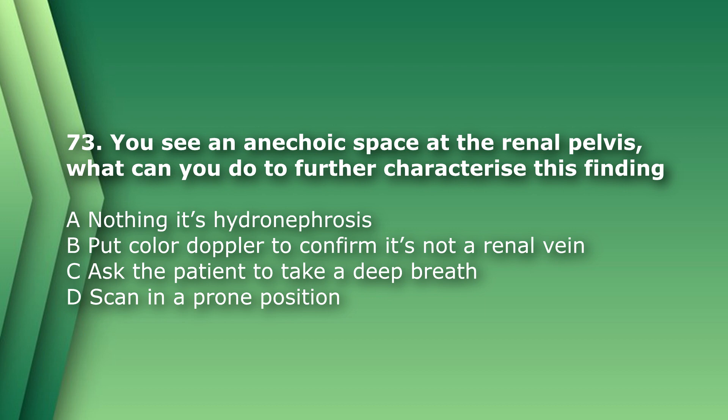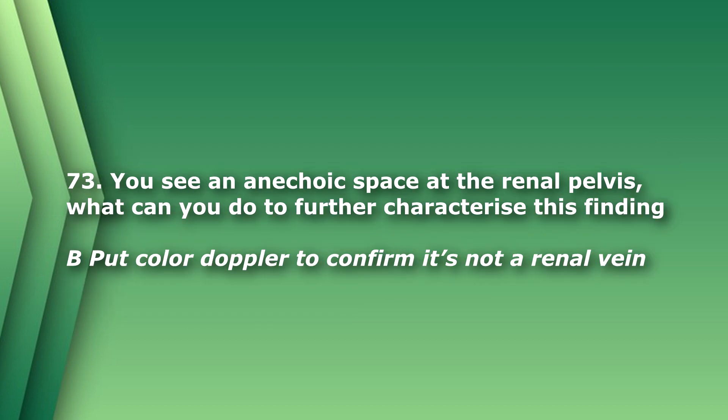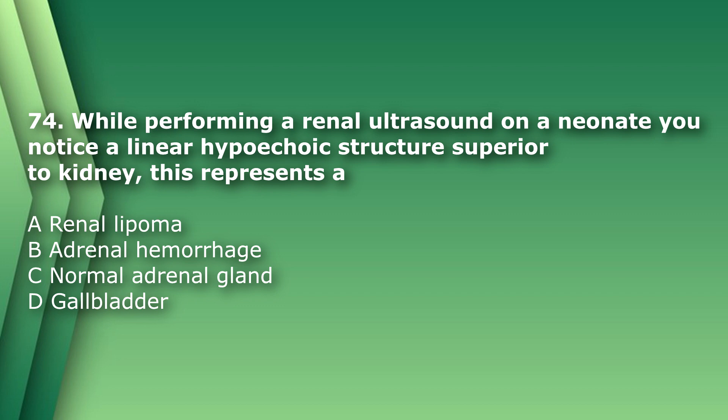Question 73: You see an anechoic space at the renal pelvis — what can you do to further characterize this finding? A) nothing, it's hydronephrosis, B) put color Doppler on it to confirm it's not a renal vein, C) ask the patient to take a deep breath, D) scan in the prone position. Though C and D can further help characterize hydronephrosis, putting color Doppler on to confirm it is not a renal vein could be your first step — so the answer is B.